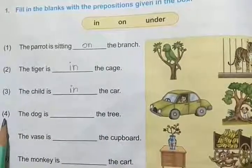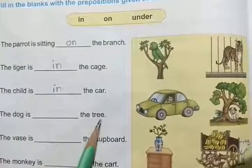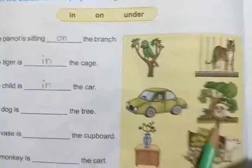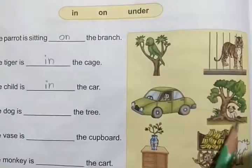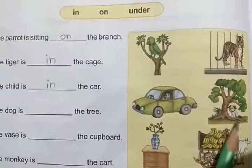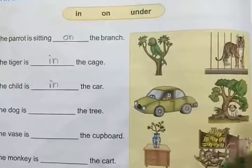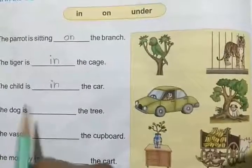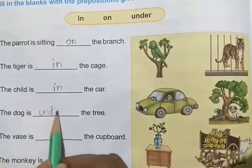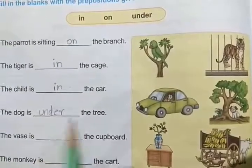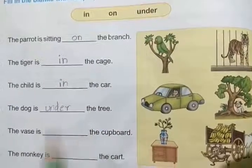Fourth one: The dog is dash the tree. This picture you can see now. The dog is — in, on, or under? Very good — under. The dog is under the tree.